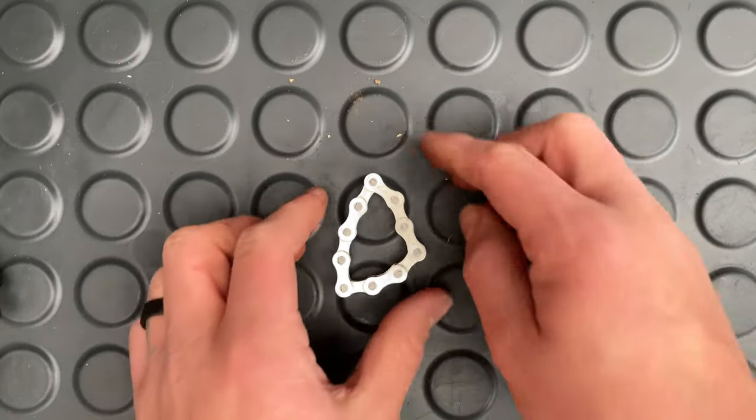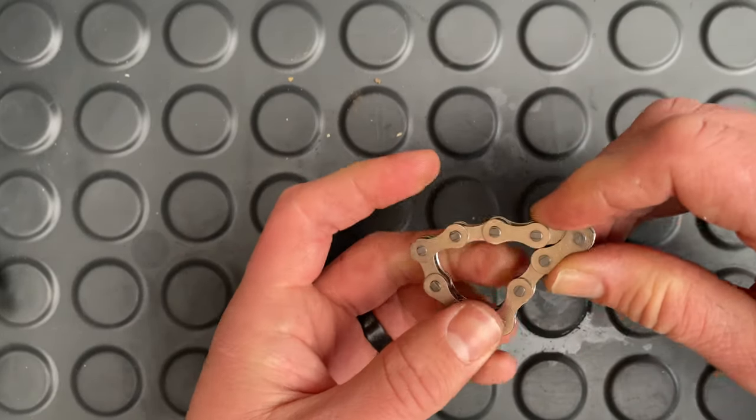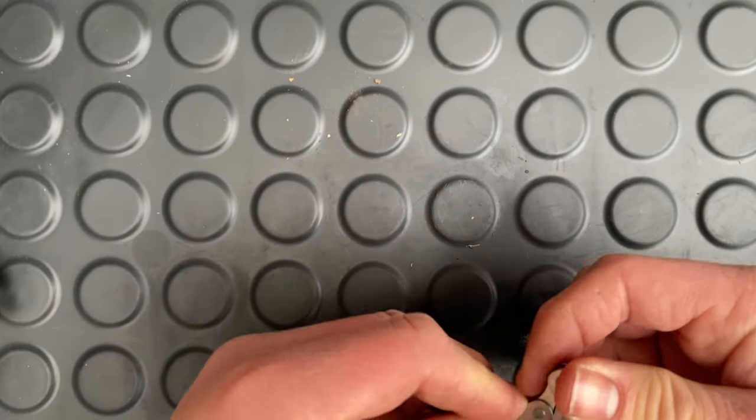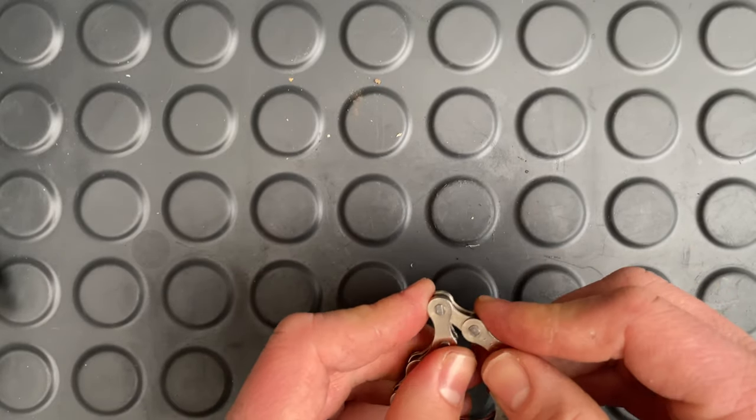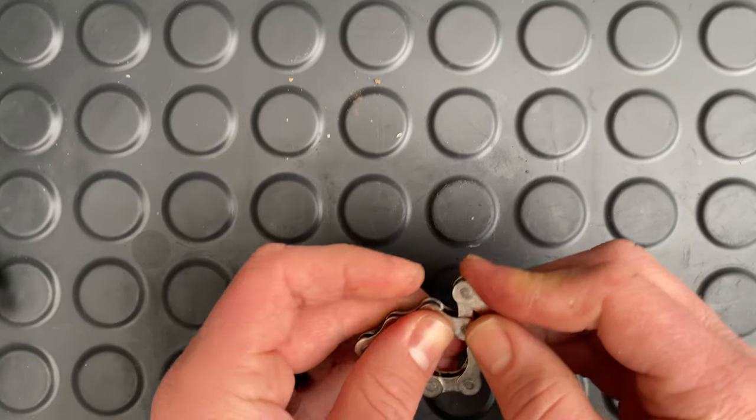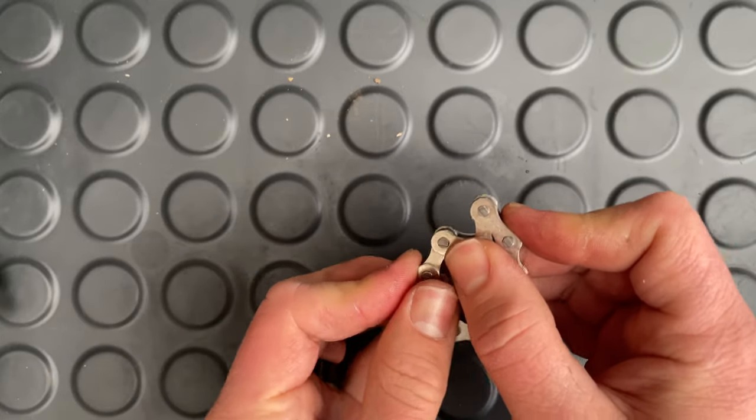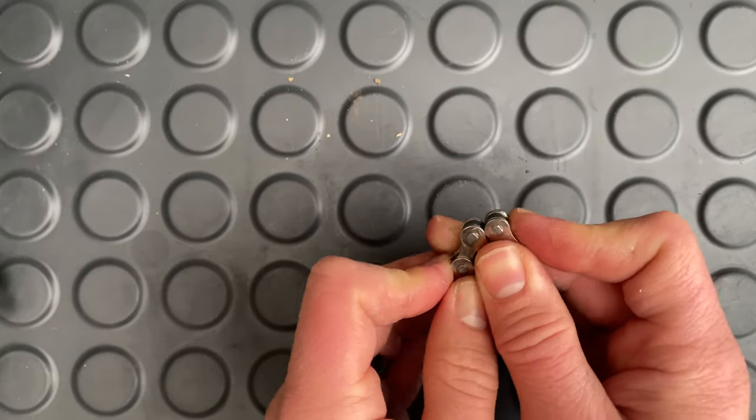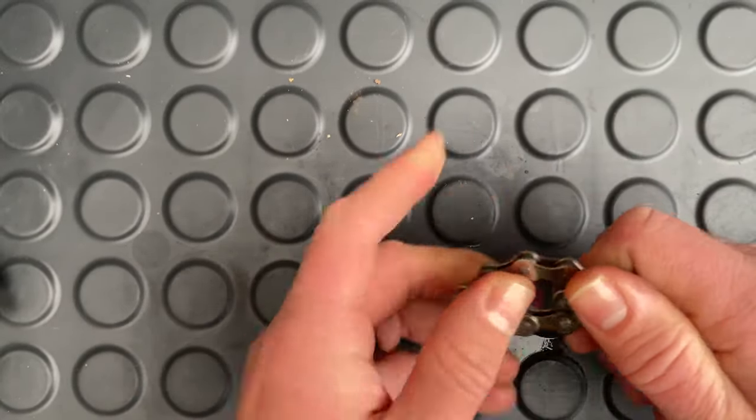At this point you should have your chain nice and tight and you can start folding it into the star shape which is way easier said than done. I'd probably say practice with a loose chain a couple of times just so you know exactly which way the folds go because as soon as it's tight like this it is a little bit tricky which you will now see.